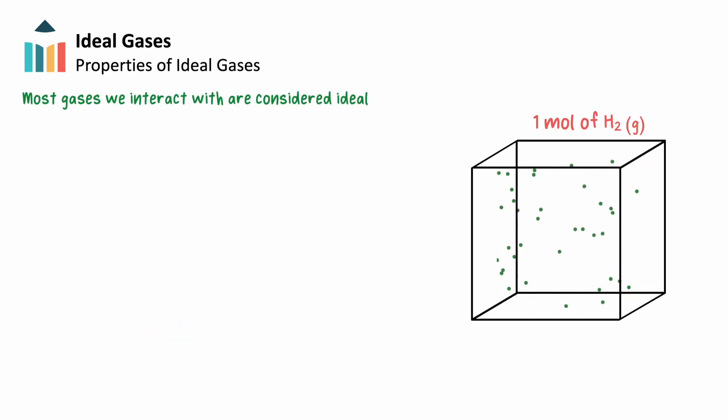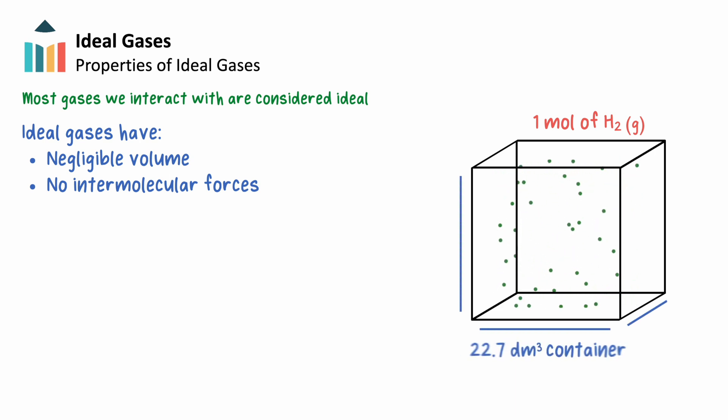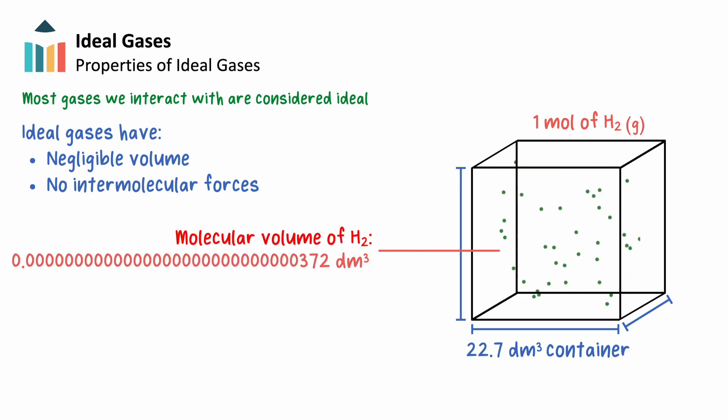Most gases that we interact with on an everyday basis and in the lab are considered ideal, but what does that really mean? Let's start with a couple assertions. An ideal gas consists of moving particles with negligible volume, and will feel no intermolecular forces when they collide with other gas molecules or the walls of their container. We can make these assertions for good reason. In terms of magnitude of size, gases are much smaller than the containers in which they typically exist, so much so that we could ignore their individual volumes.